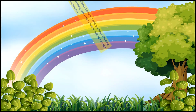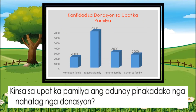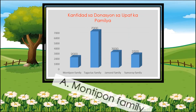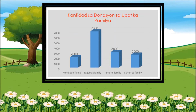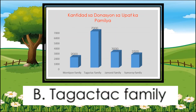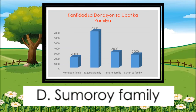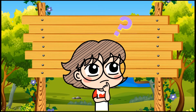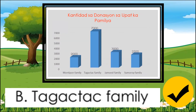Directions: tanawa ang graph. Pili ang insaktong letra nga imong tubag sa mga pangutanan. Kinsa sa upat ka pamilya ang adunay pinakadako nga nahatag nga donasyon? A. Montipon family. B. Tagaptak family. C. Hamorol family. O D. Sumuroy family. Letrang B ang tubag.